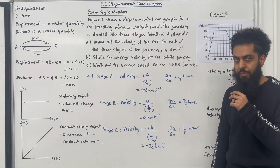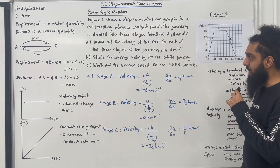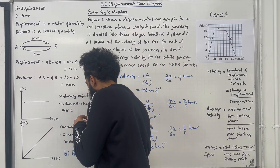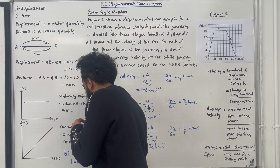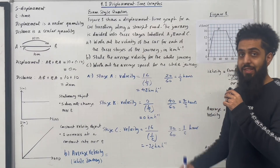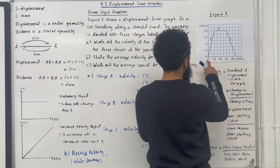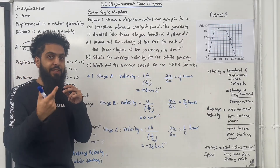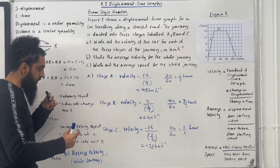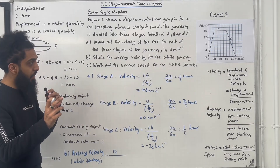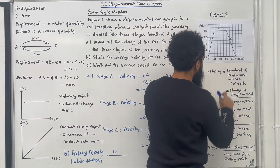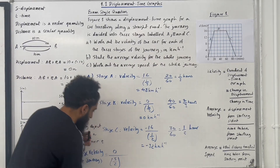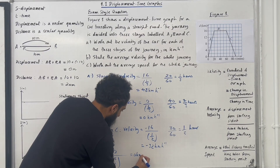That completes Part A. Moving on to Part B: state the average velocity for the whole journey. Average velocity equals total displacement from the starting point divided by time taken. We start at zero and return to zero: going forward 16 then backwards 16 gives a displacement of zero. The total time is 90 minutes, which is 3/2 or 1.5 hours. So average velocity equals zero over 1.5, giving zero kilometres per hour.